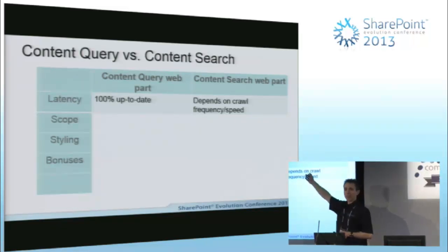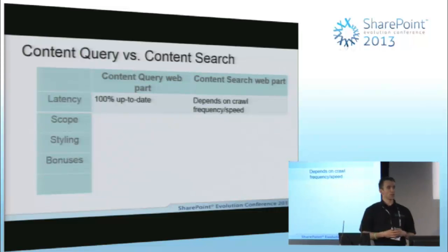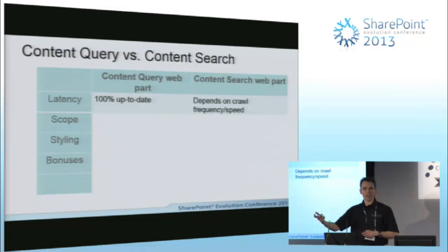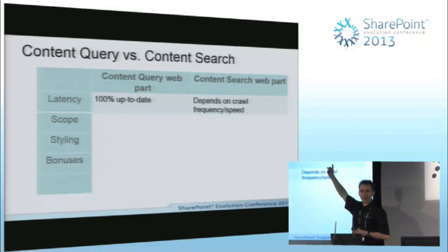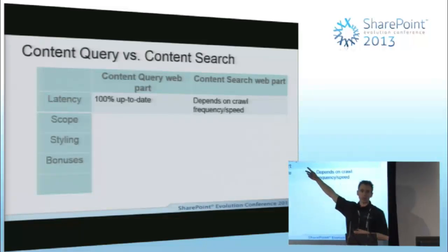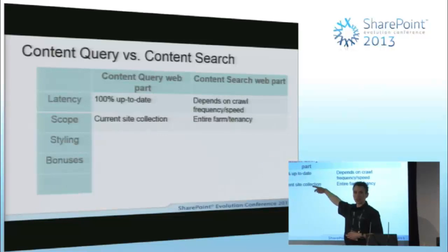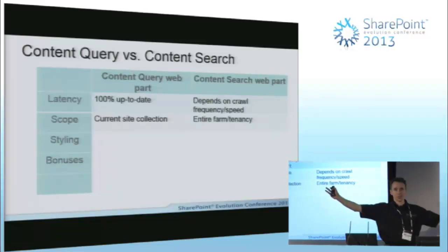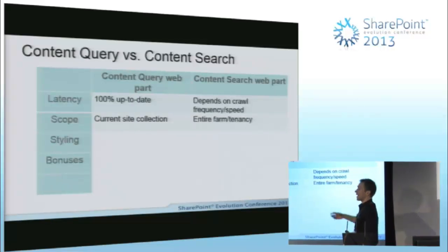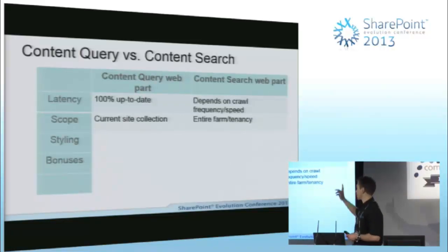This crawl dependency alone is a big decision factor when deciding which web part is suitable. If editors expect their new or edited data to show up immediately, that's not the case with the content search web part — which might drive us back to the content query web part. In terms of scope, the content query web part and the underlying SP site data query can only go within the current site collection. But the content search web part can show news articles from across an entire set of SharePoint sites, because search is the one thing in SharePoint that can see across all sites — and that's what makes it powerful.